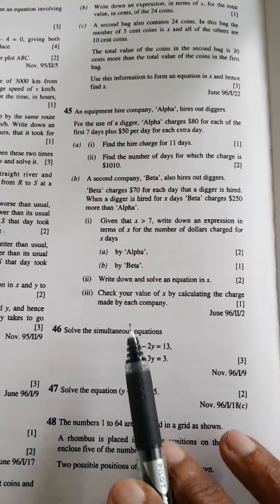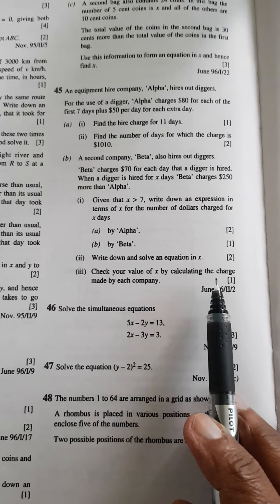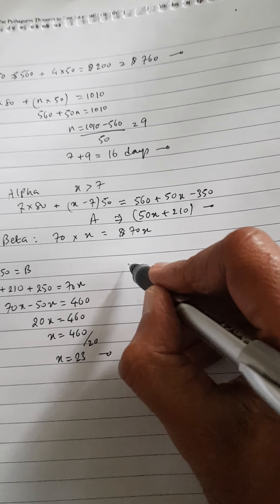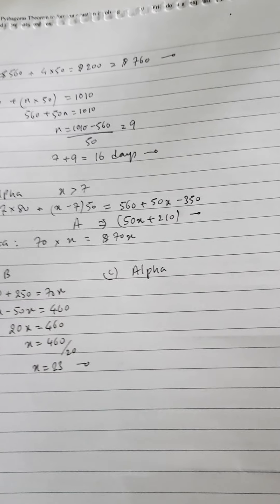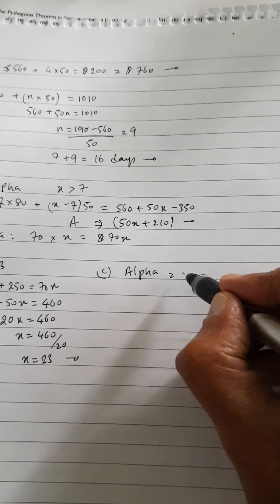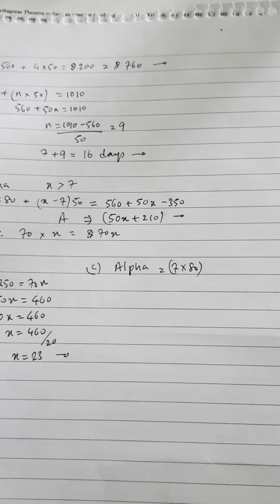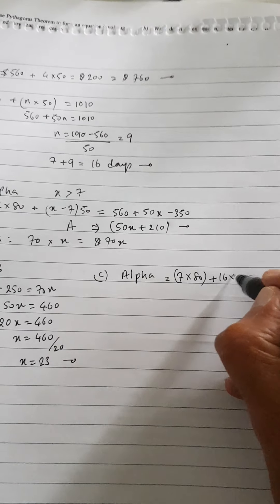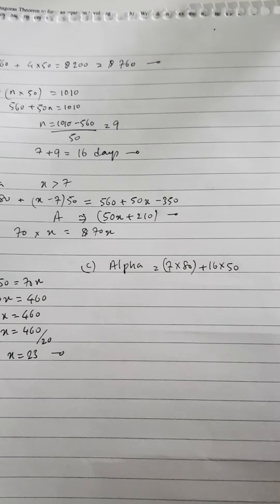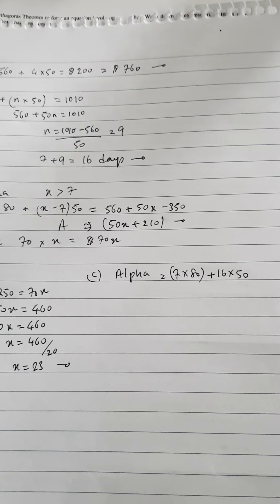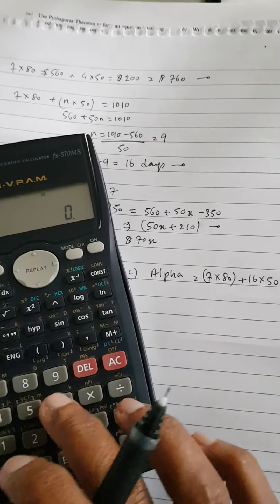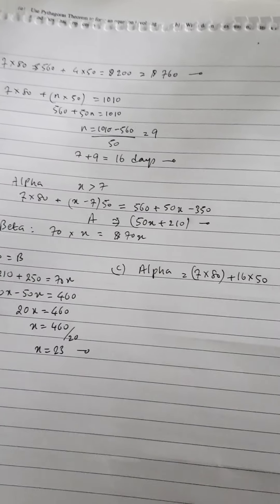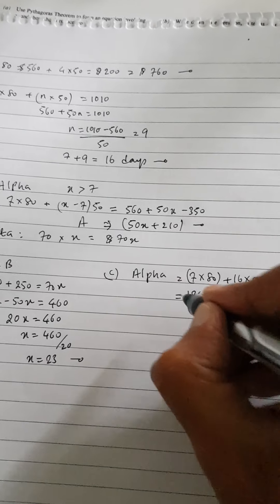Now, last part of the question. Check your value of X by calculating the charge made by each company. Let's go for Alpha. How much Alpha is going to charge for X number of days, which is 23 days? It's going to be 7 times 80 always. That's the first 7 days. Then for the extra number of days, it was 23 minus 7, which is 16. So you're going to get 16 times 50. So I've got 560 plus 16 times 50. So Alpha is charging $1,360.